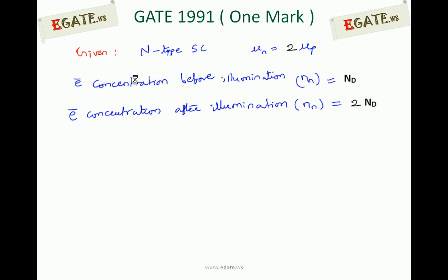Given information: n-type semiconductor. In an n-type semiconductor, majority carriers are electrons and minority carriers are holes. Majority carriers, as the name implies, are very large in number; minority carriers are very small in number compared to majority carriers. Mobility of electron mu_n is equal to 2 times hole mobility mu_p.